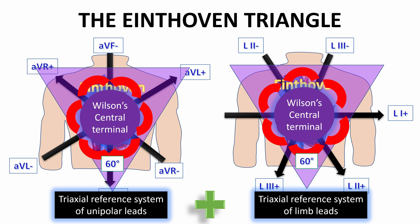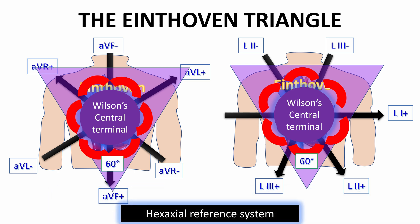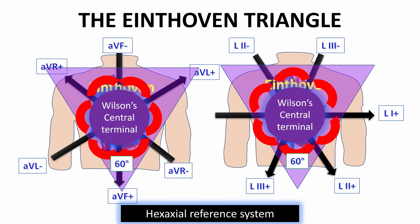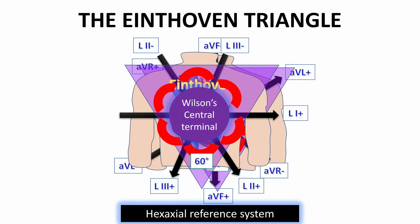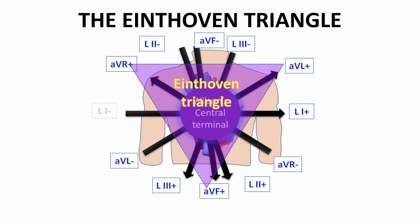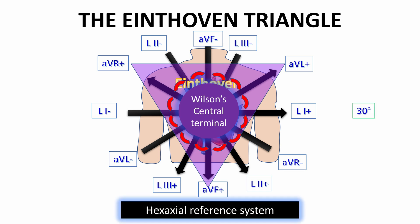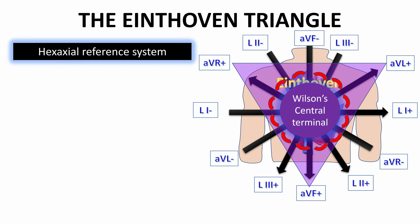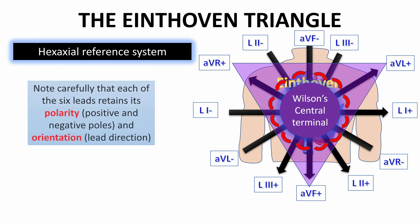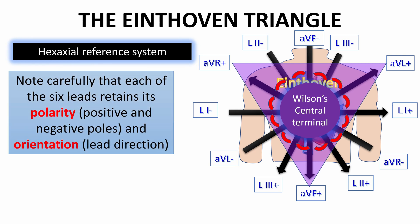Today we will fuse both triaxial reference systems to summon the hexaxial reference system, with each axis being separated by 30 degrees from the other. Note carefully that each of the six leads retains its polarity — positive and negative poles — and orientation, i.e., lead direction. We will talk about lead orientation in the next slide.